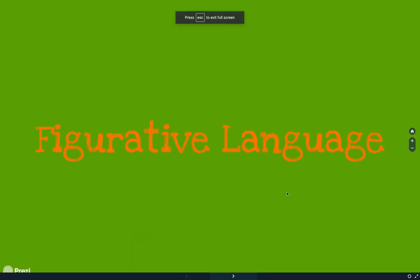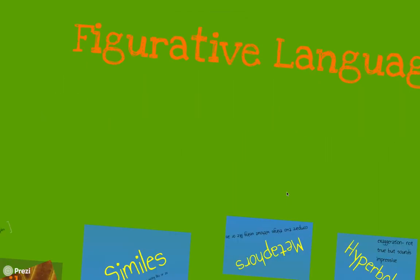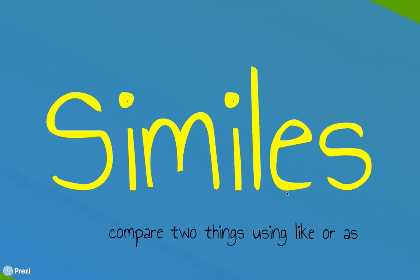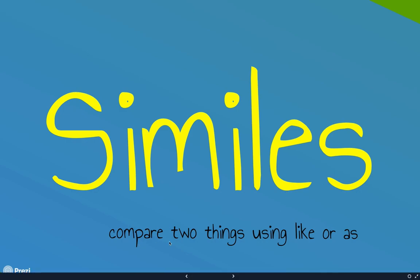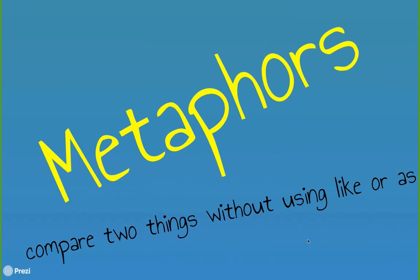There are many different types of figurative language. A simile is one type — this is where you compare two things that do not normally have similar qualities, using the words 'like' or 'as.'